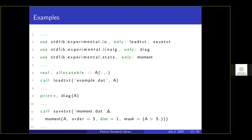Here are other examples of what is already implemented in the standard library. In this small sample, we use the subroutine load_txt to read a matrix from a text file. Then the function diag extracts the diagonal elements of a 2D array. Then the function moment computes the moment value along dimension one of array A with a certain mask, and the result is saved to a text file. This simplifies Fortran programs quite a lot.